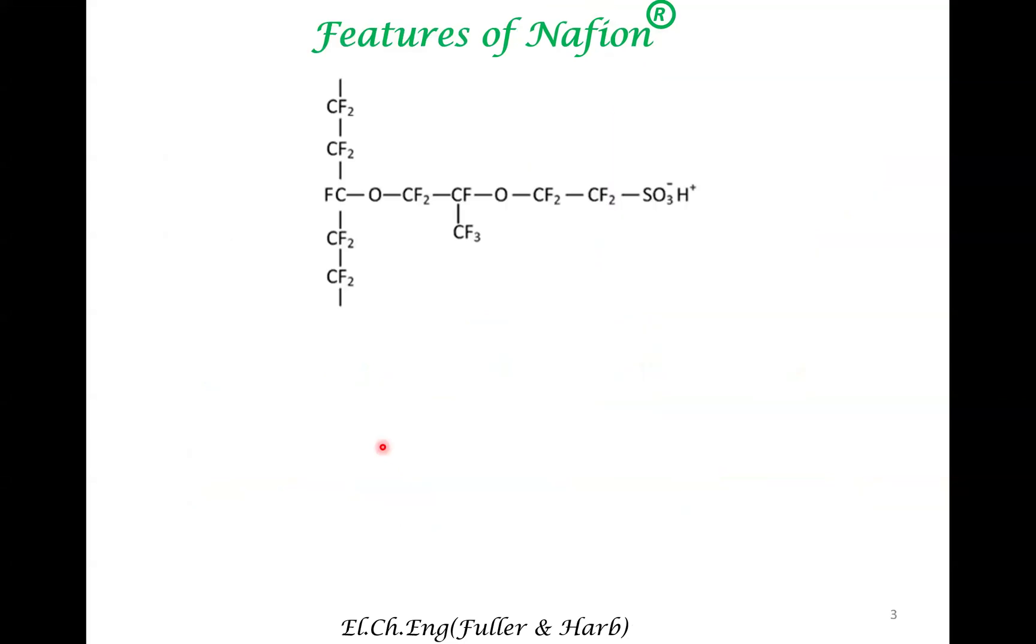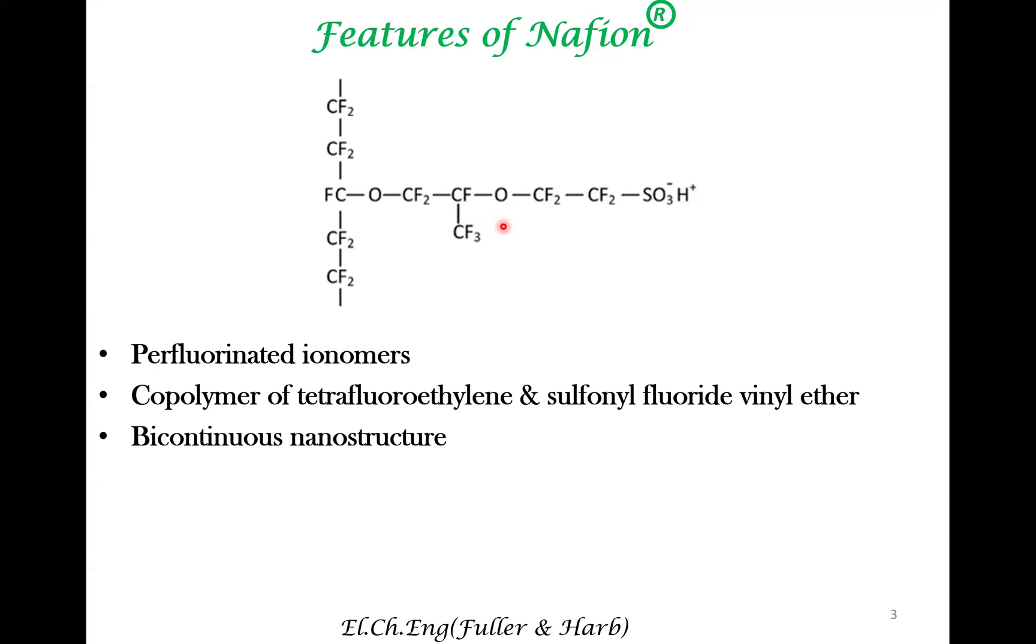Let's move on. So this structure, as I mentioned, it is perfluorinated ionomer. So all this backbone is fluorinated. And because it's a charged polymer, these are ionomers. It is a copolymer of two species. One is tetrafluoroethylene, this fluorinated polyethylene, and this species that I mentioned earlier. So it is a bicontinuous nanostructure.